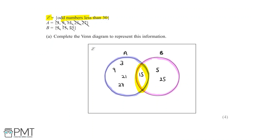Although we've completed both set A and set B, we haven't quite completed this question. We're told that the data set is all odd numbers less than 30, which means odd numbers less than 30 that are not in set A nor set B will fall outside of the circles in the Venn diagram — within the green box but outside of circles A and B. For example, the number 1 is not in set A or set B but is still an odd number less than 30, so we can place it in the box.